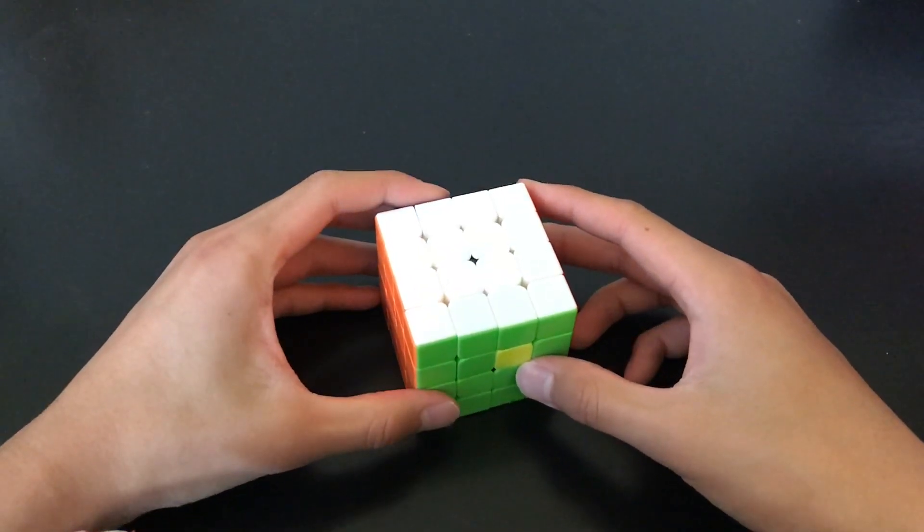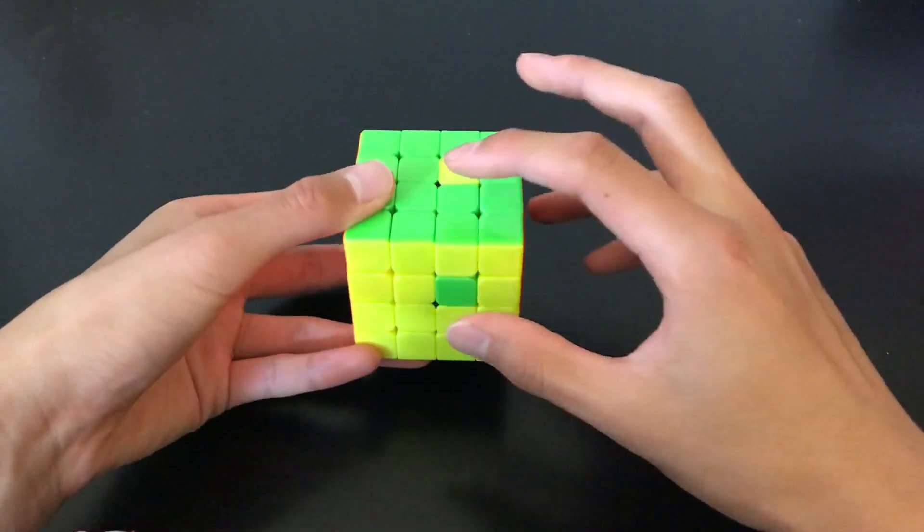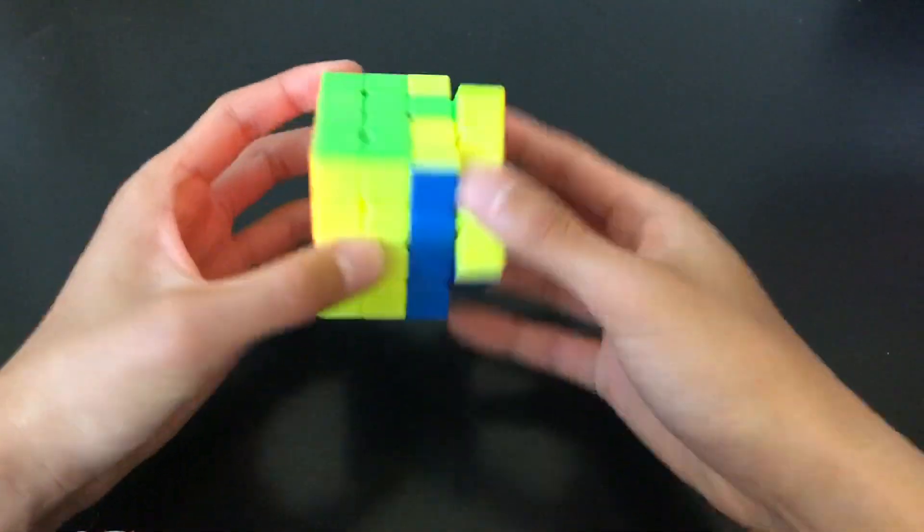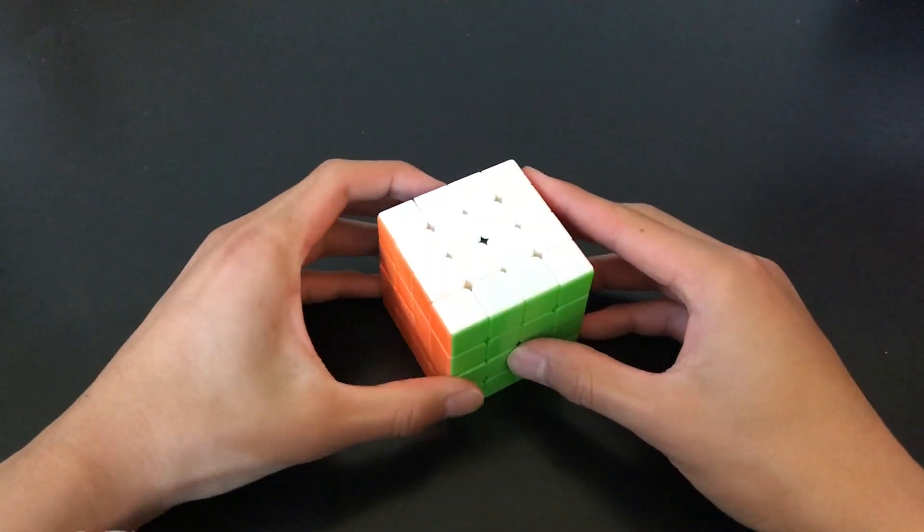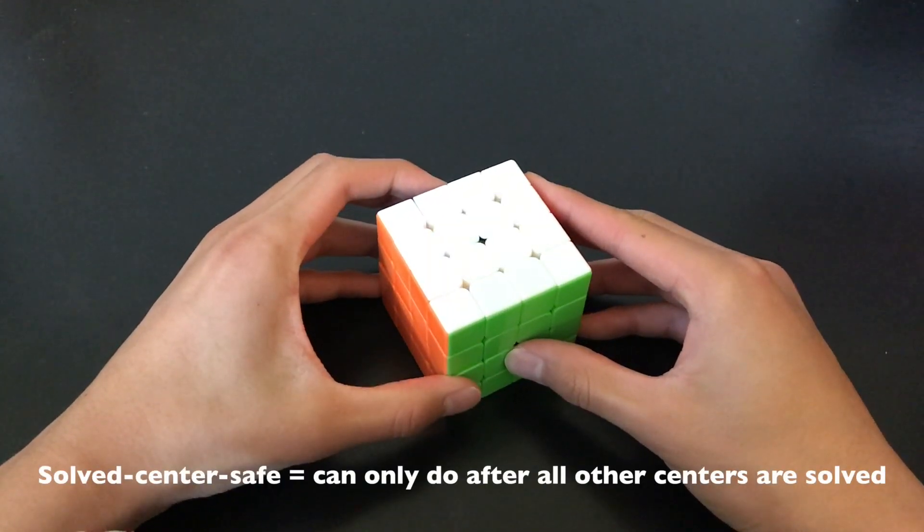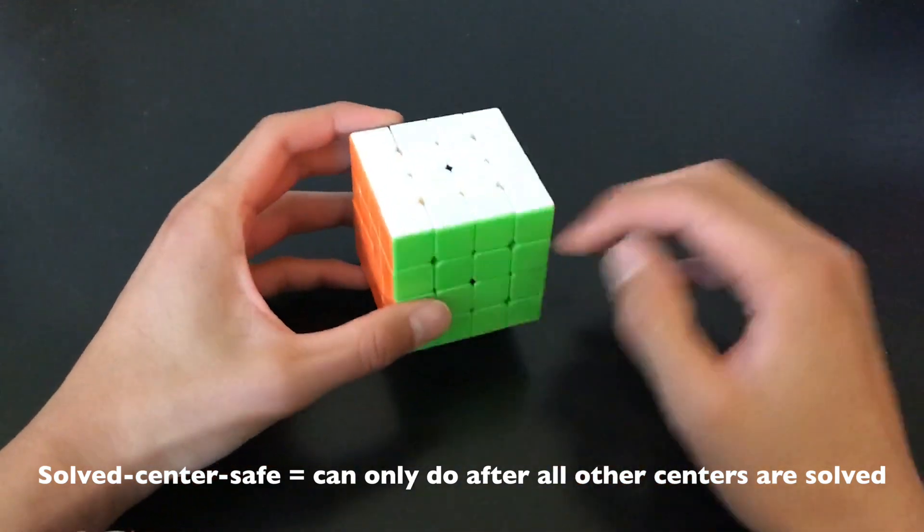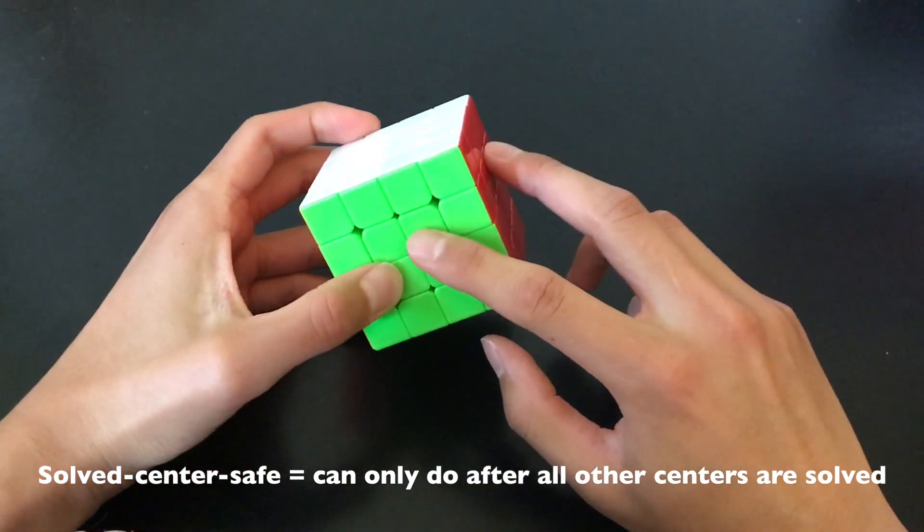Let's take a look at another example. Let's say we need to swap these two centers. We can rotate and then do the alg. Note that these algs are only solve centers safe, which means you can only do them after you solve all the other centers except for those two. Otherwise, they'll mess up the other centers.